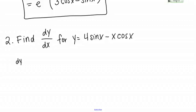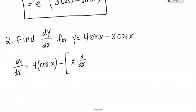So dy/dx equals: for 4 sine x, the 4 is just a constant multiple that stays, and we need the derivative of sine x, which is cosine x. Then minus — I'm going to put this derivative in brackets, because when I simplify I want to remember to distribute that subtraction sign to the multiple pieces of the product rule. The derivative of x cosine x by the product rule is first times the derivative of the second, plus the second times the derivative of the first.